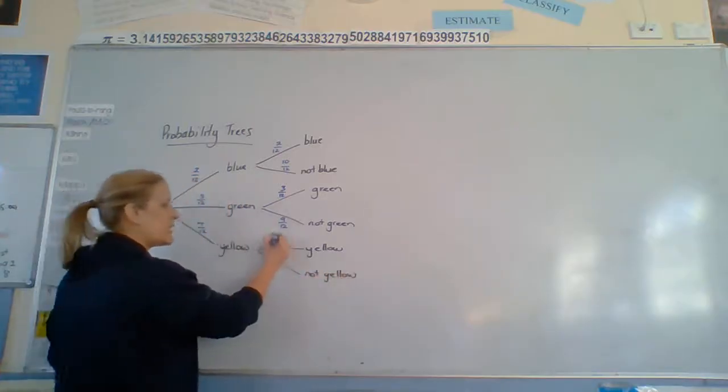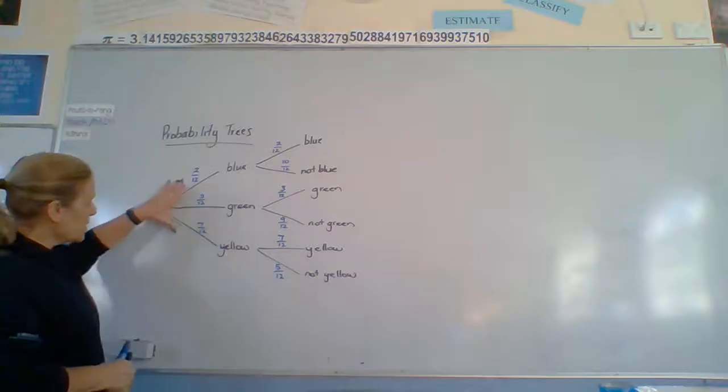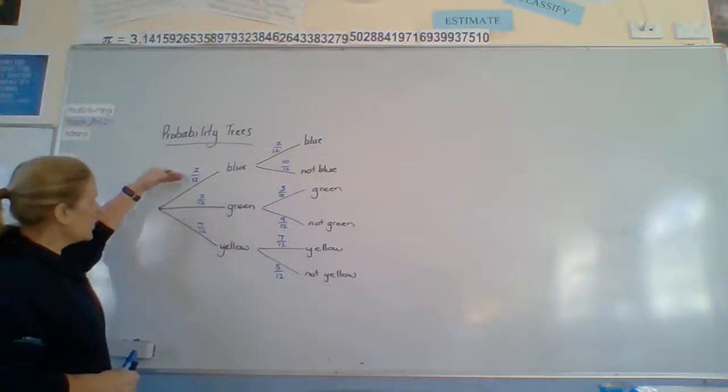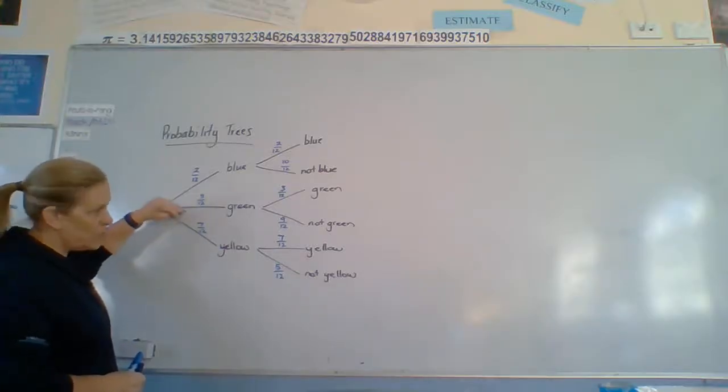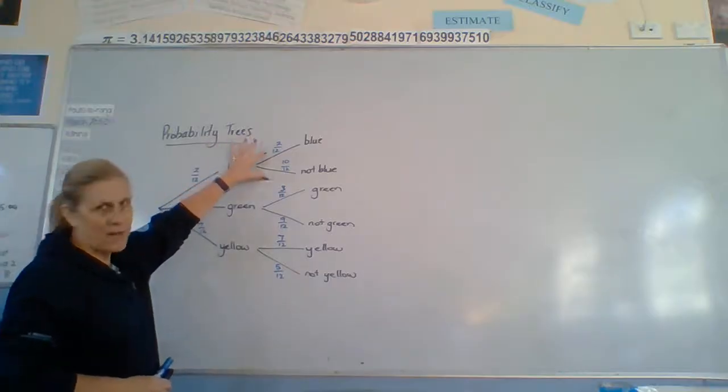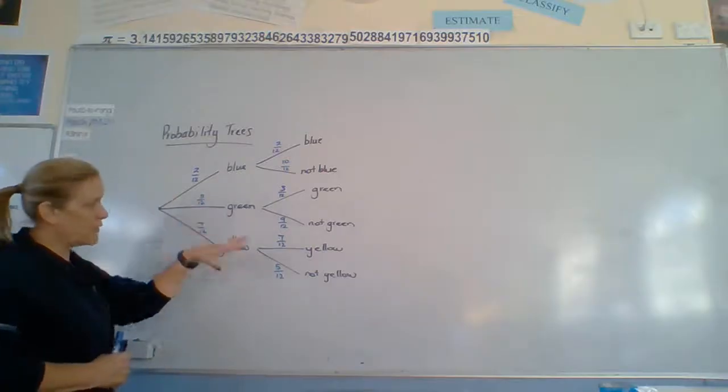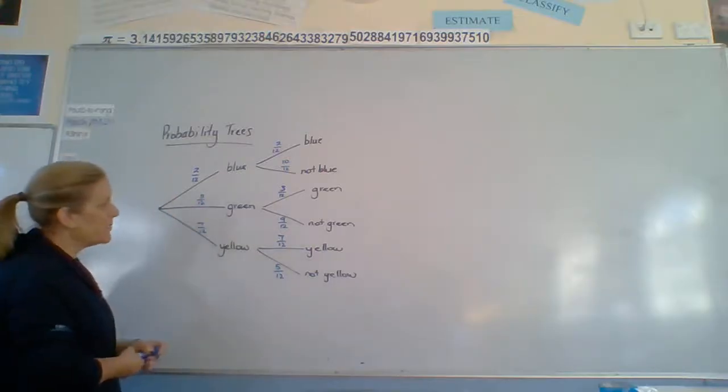We've got 7 out of 12, and what's the left? 5 out of 12. So, every little set of branches should always add up to 1. 2 twelfths, 3 twelfths, and 7 twelfths is 12 twelfths, which is 1. 2 and 10 is 12 twelfths. That's 1 for each branch, so that you know that covers all the possibilities in there.